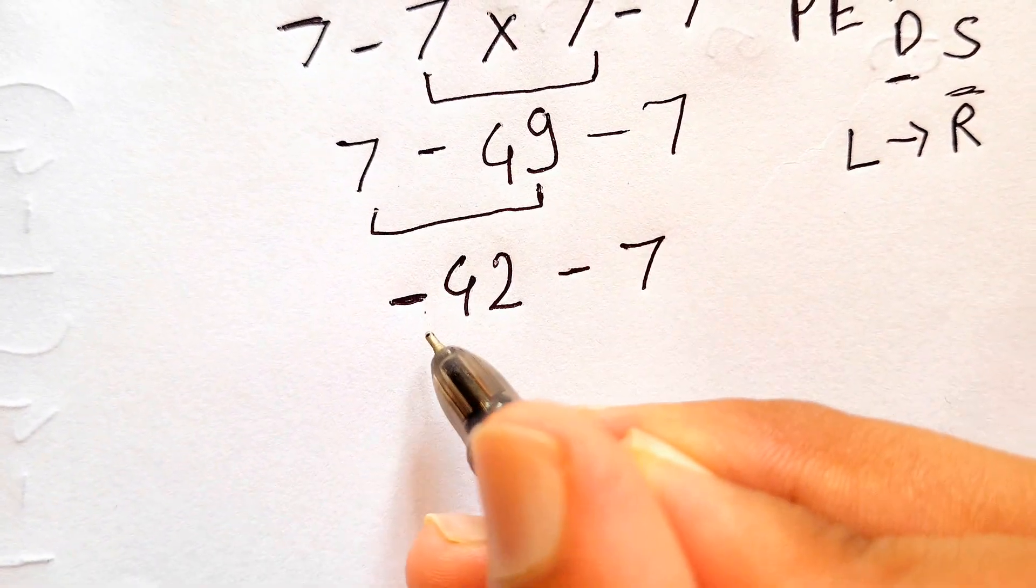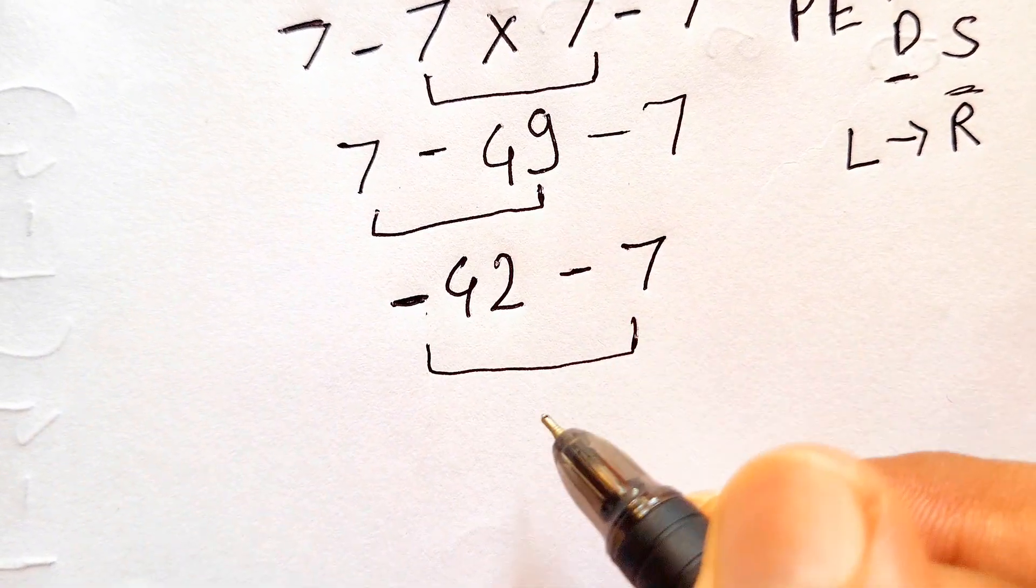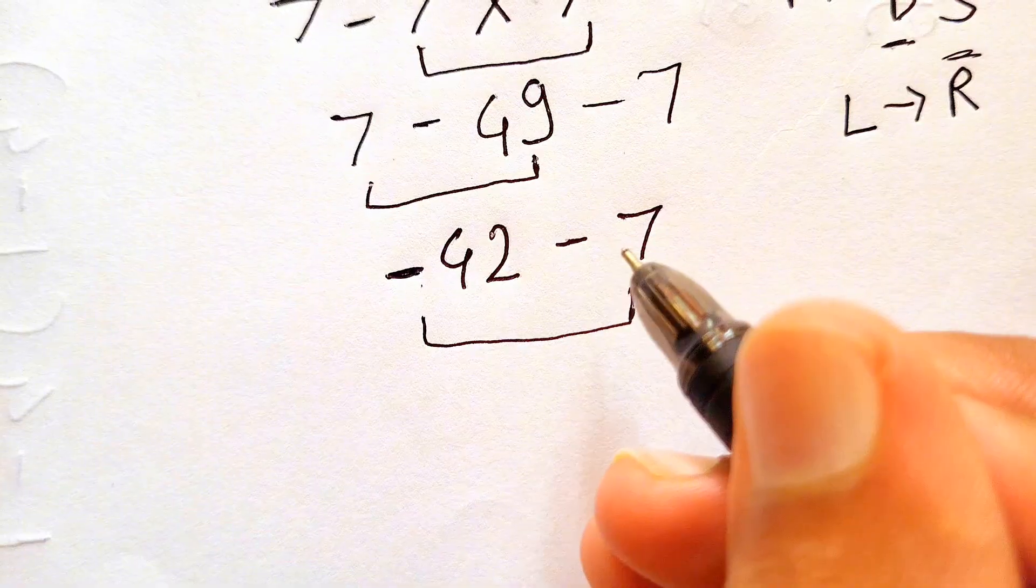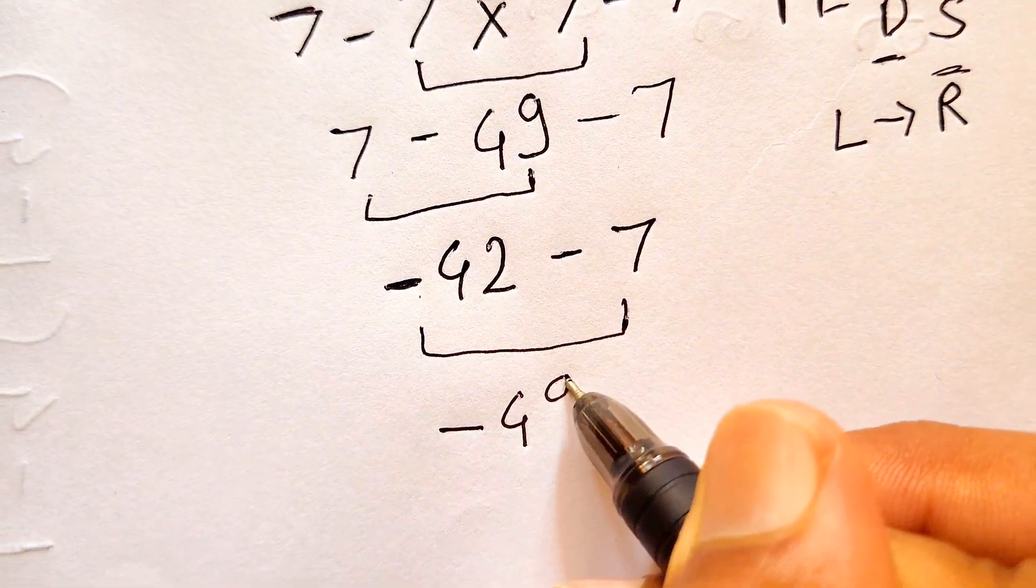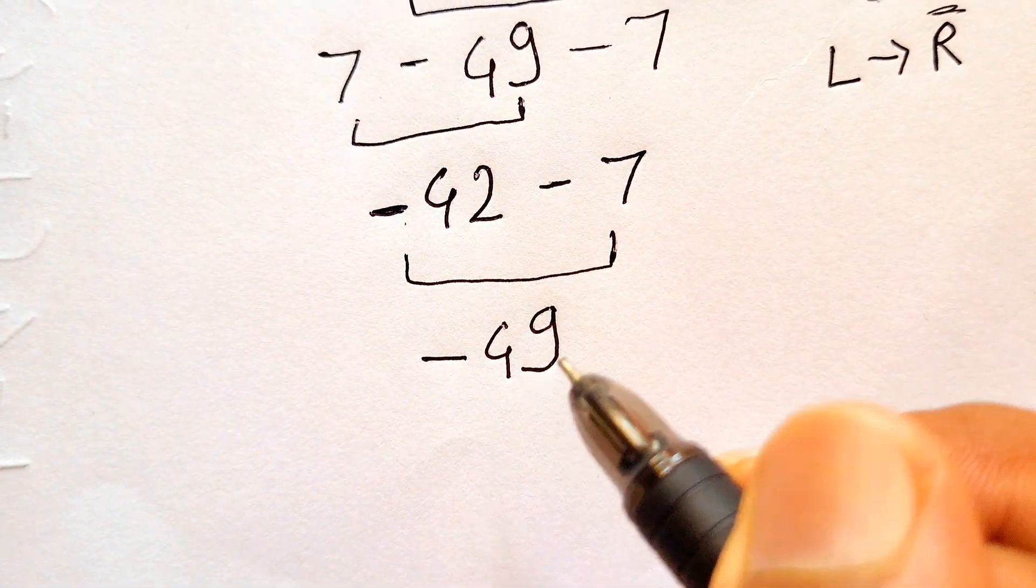Now for solving this, we know subtraction of subtraction is simply addition, but we need to give the sign of the greater number. So the answer is minus 49. So this is the correct answer for this expression.